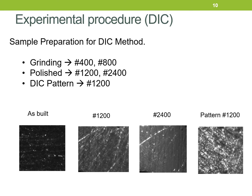The pictures in this slide show the steps followed to obtain a surface pattern to apply the DIC technique. All steps were done manually with sandpapers of different grades, ending with number 1200 to create the final pattern. In this case it is shown with higher brightness, but when pictures for DIC are taken, the brightness is lower.